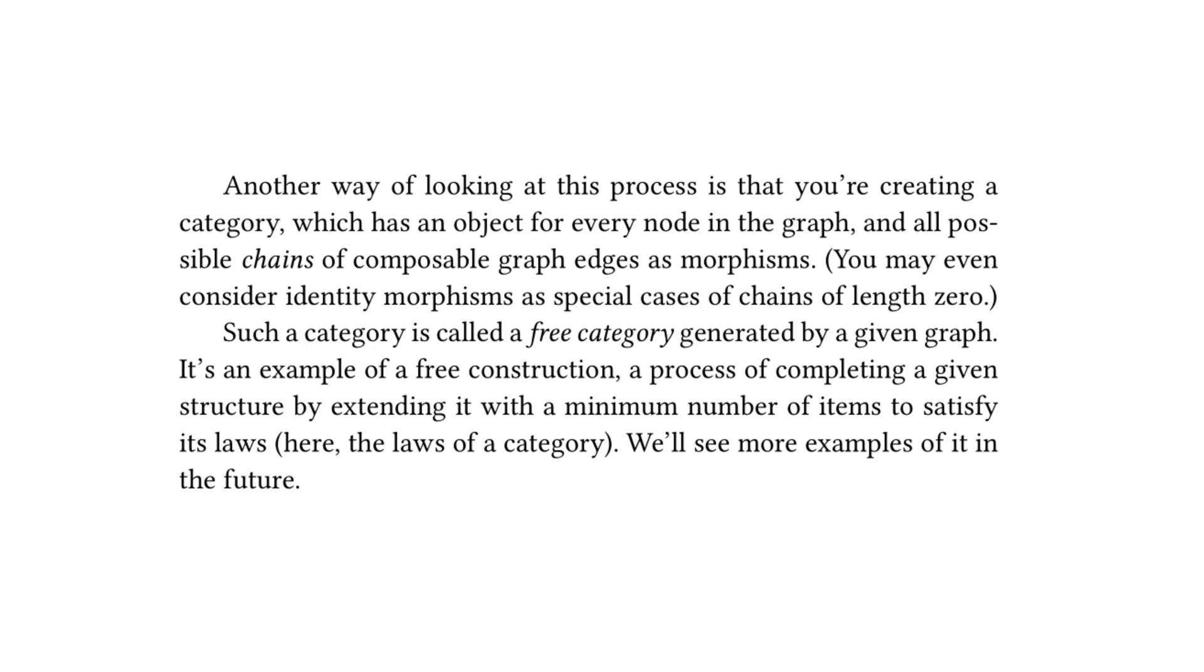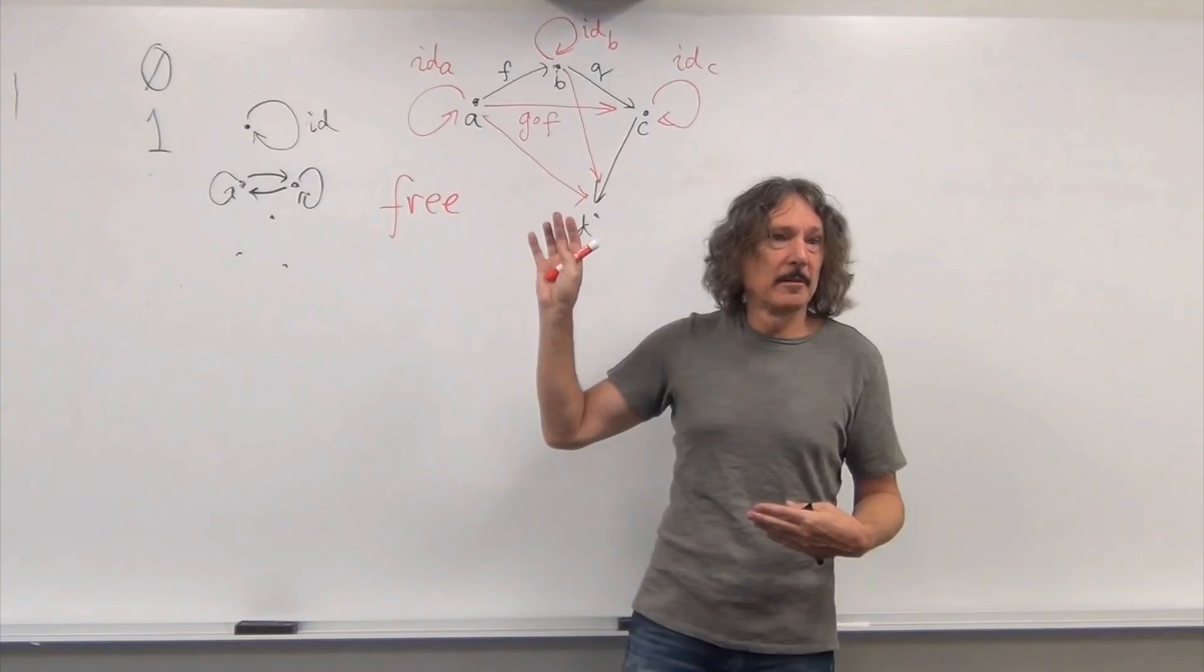And the text goes on to read, another way of looking at this process is that you're creating a category which has an object for every node in the graph and all possible chains of composable graph edges as morphisms. You may even consider identity morphisms as special cases of chains of length zero. Such a category is called a free category generated by a given graph. It's an example of a free construction, a process of completing a given structure by extending it with a minimum number of items to satisfy its laws. Here are the laws of category. We'll see more examples of it in the future. And I thought that these three paragraphs were extremely clarifying for some of the discussions that the meetup had been having over the first two meetings.